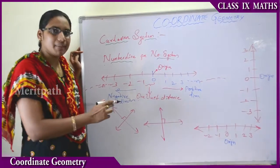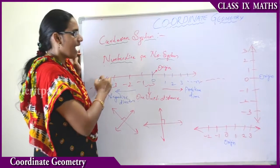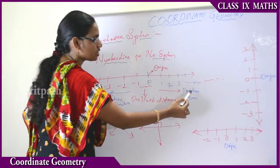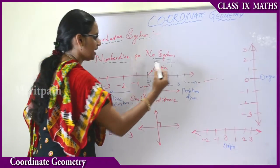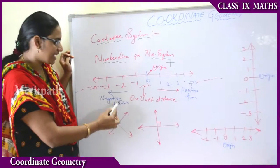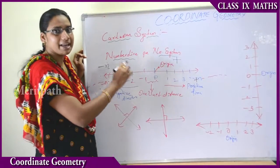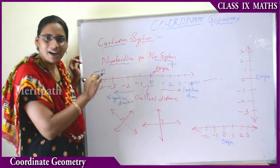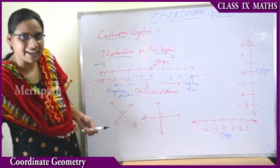Now let us see in detail how to represent each term in the Cartesian system. We know how to represent the number line: zero is placed at the center and is known as the origin. To the right side of zero is the positive direction — positive numbers, positive integers — denoted as 1, 2, 3 up to positive n. To the left side of the origin is the negative direction — negative elements, minus 1, minus 2, minus 3, up to minus n. In the same way, we use this to define the Cartesian system using two perpendicular lines: one horizontal and one vertical.